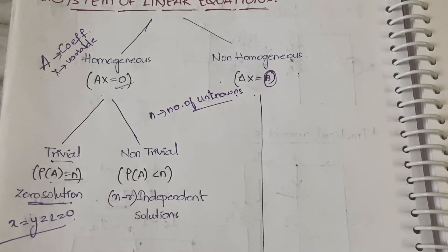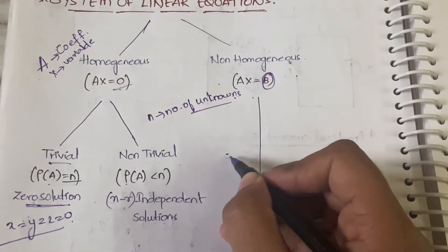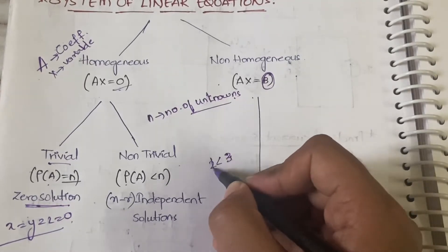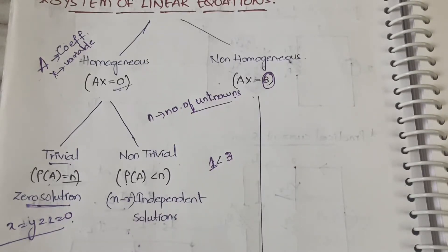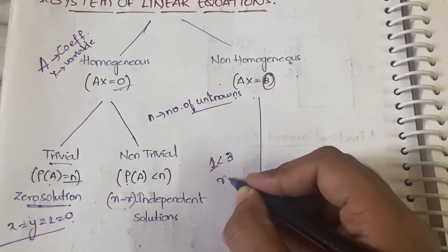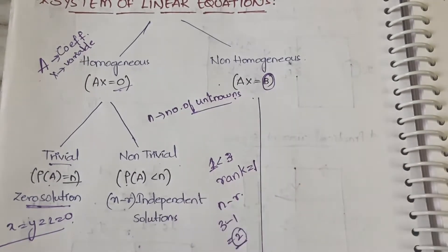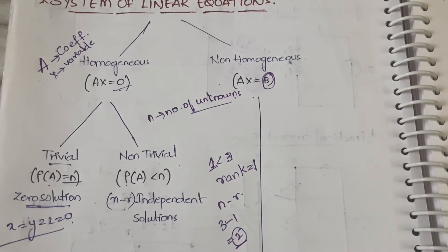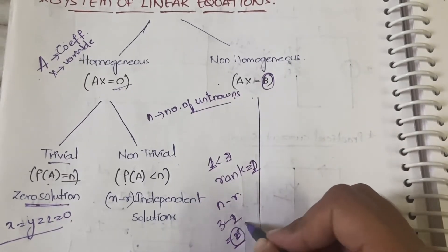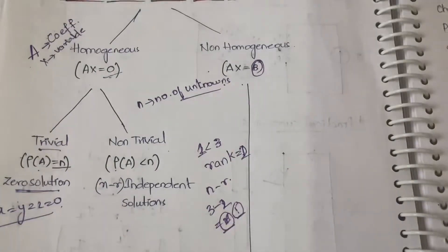The other category is non-trivial solution, where the rank of A is less than n. For example if n equals three but the rank comes out as two or one, it is non-trivial. There will be n minus r independent solutions, where r is the rank. If rank is one, you get 3 minus 1 equals two independent solutions — you assume two values and find the third. If rank is two, you get one independent solution. This will be explained further with example problems.